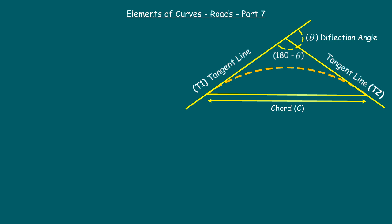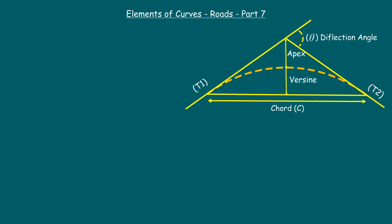The center of this chord is the midpoint of the chord. The distance from the midpoint of the curve to the intersection point is the apex, also known as the apex distance. The distance from the midpoint of the curve to the midpoint of the chord is the versine. Every highway engineer shall know and remember these two points.